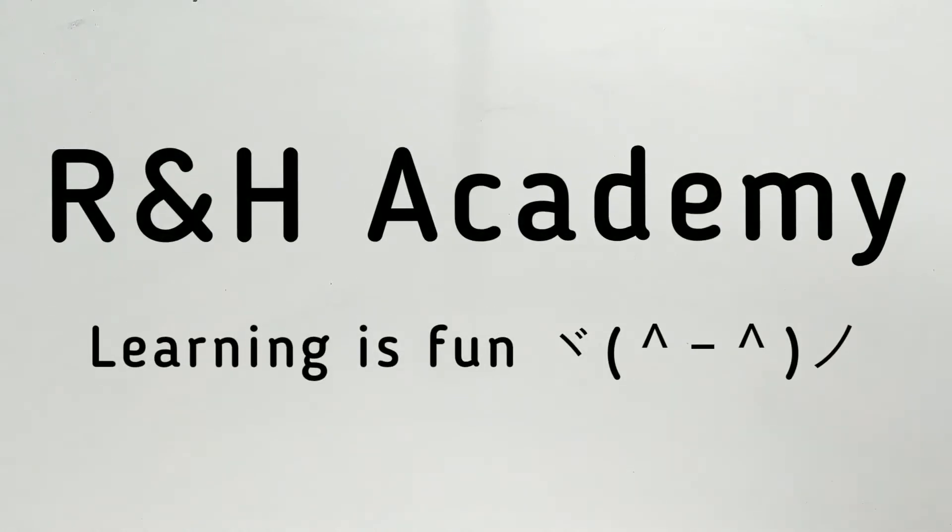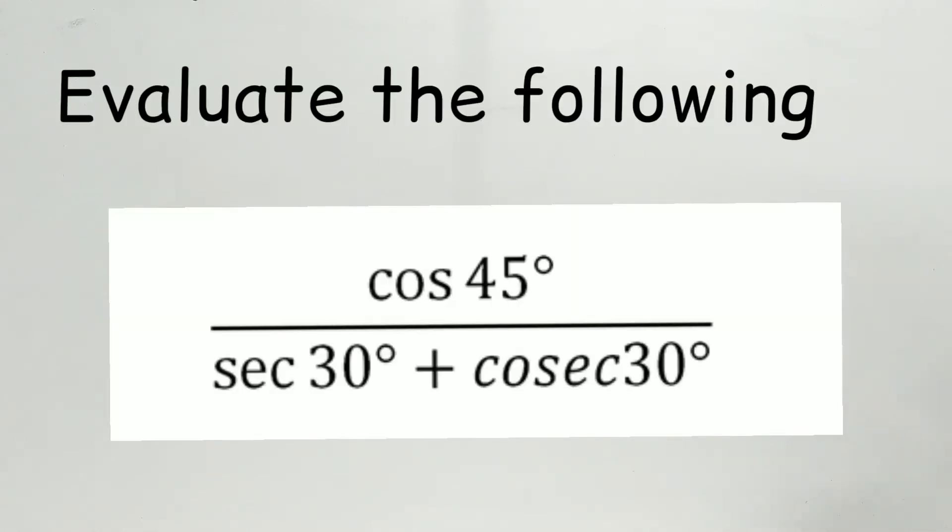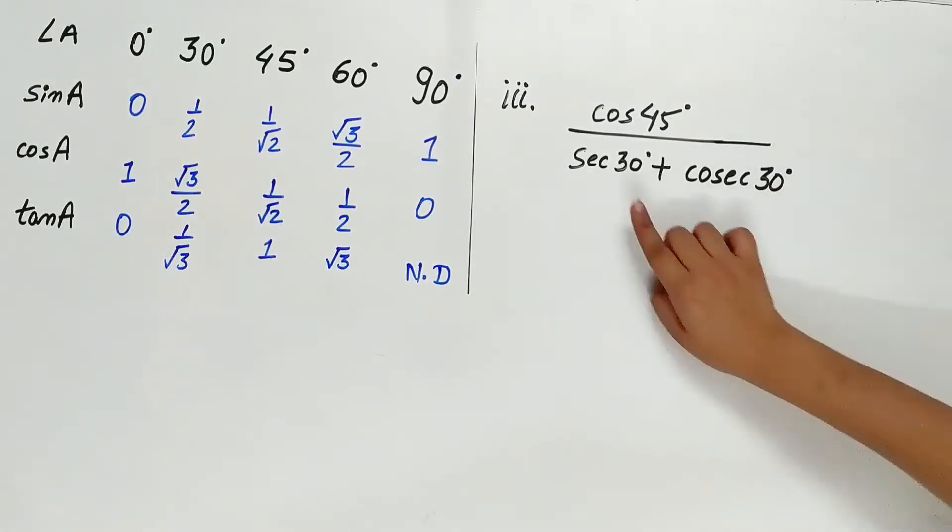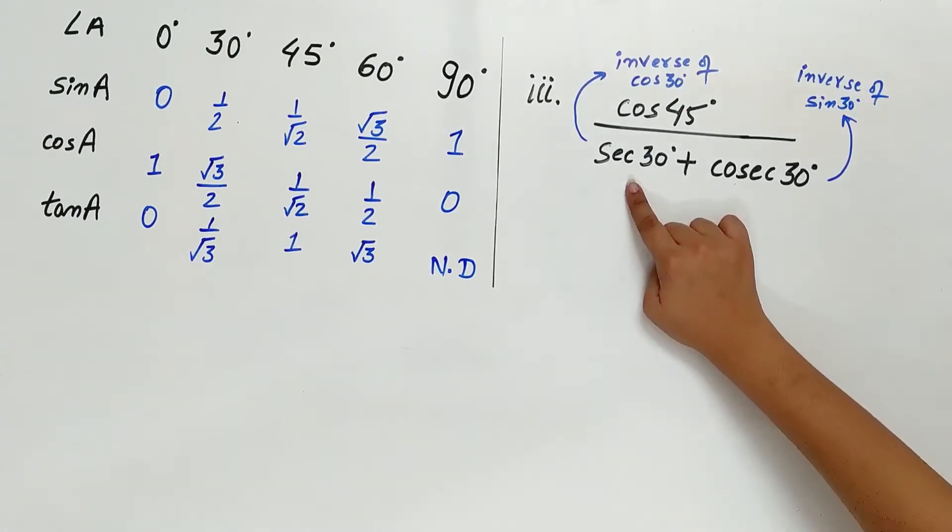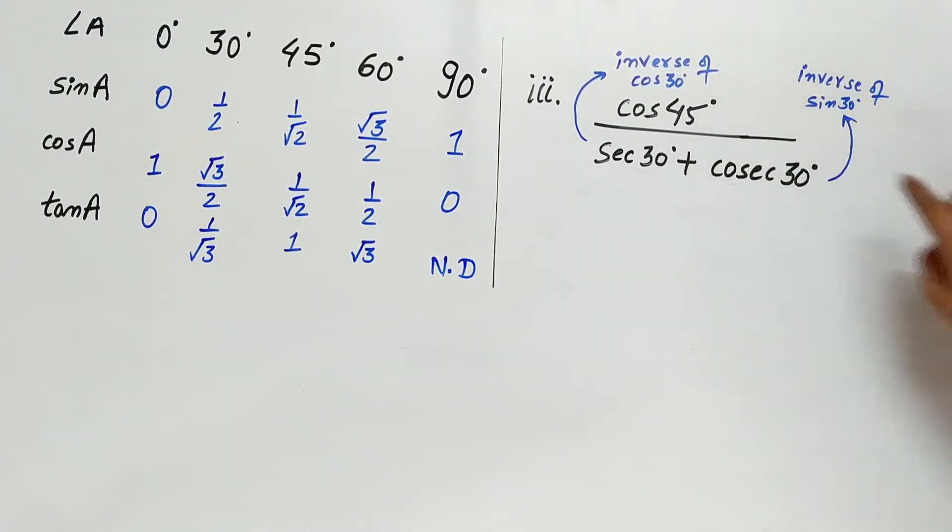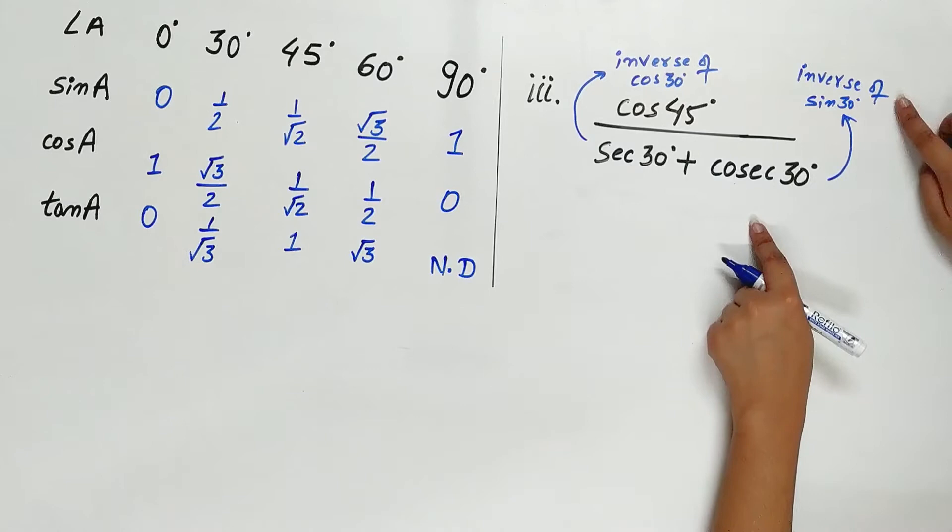Welcome to rfhp.com. Part 3 of question number 1 is cos 45 degree divided by sec 30 degree plus cosec 30 degree. Sec 30 is inverse of cos 30 and cosec 30 is inverse of sin 30.